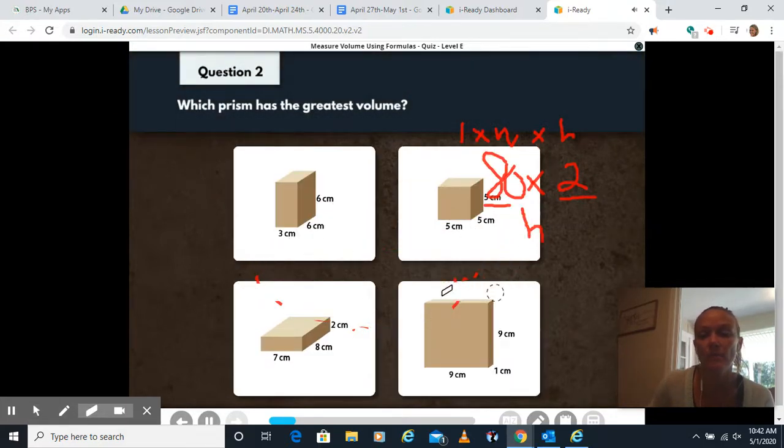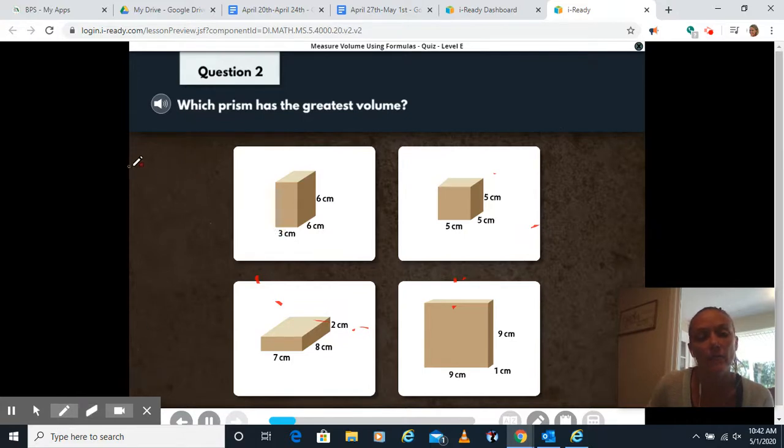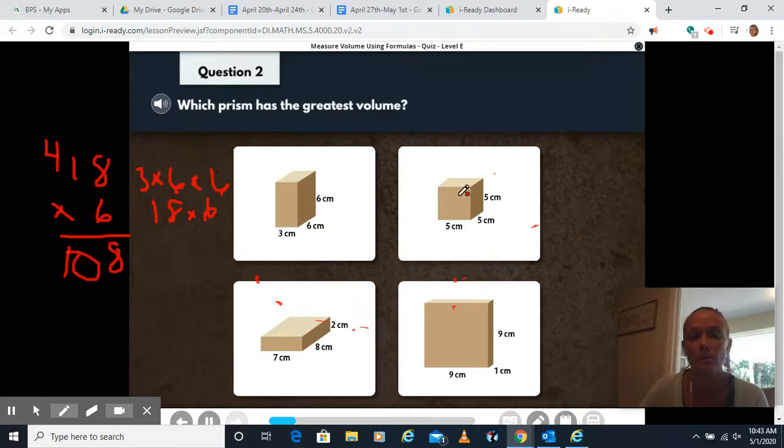On the next one, which prism has the greatest volume? They're going to have to calculate all prisms to figure out which one has the greatest volume. So we have three times six times six, three times six is 18. 18 times six, six times eight is 48, carry the four, six times one is six, plus four is 10. So this one's 108 cubic centimeters. And this one, we have five times five times five, five times five is 25. 25 times five, I think of a quarter with 25. If I have five quarters, I have 125 cents. So 25 times five is 125.